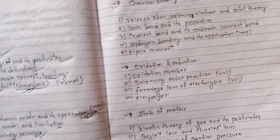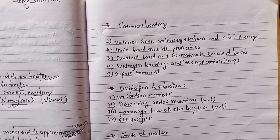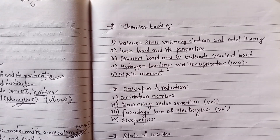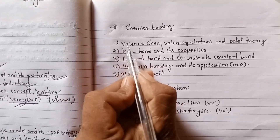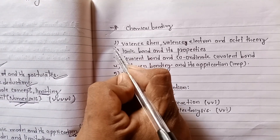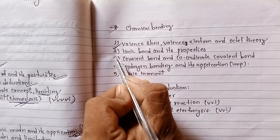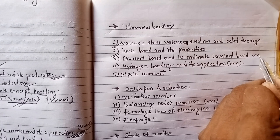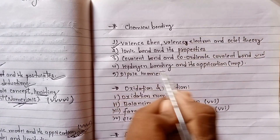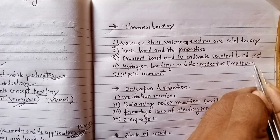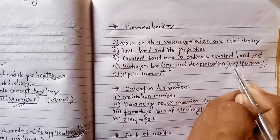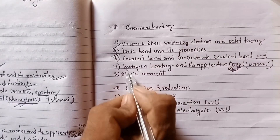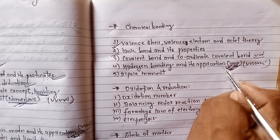Now I will discuss chemical bonding — chapter 5. Balance cell and octet theory, ionic bond and its properties, covalent bond and coordinate covalent bond are very important. Hydrogen bonding and its applications are also important.